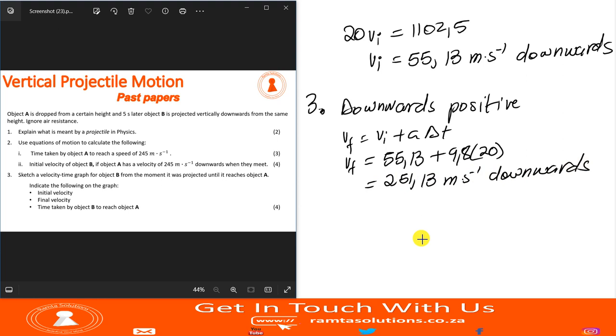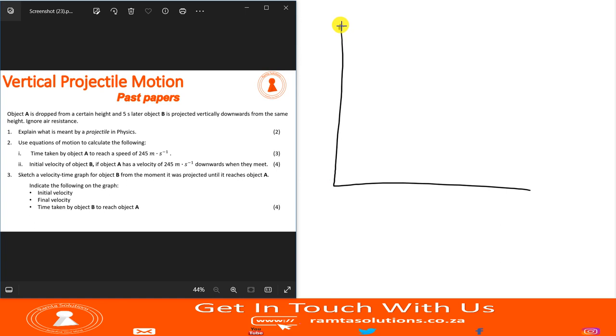So we need to sketch velocity versus time. Because we had said downwards is positive, the slope will be positive as well. So this is velocity in meters per second, and the time in seconds. Initial velocity was 55.13, final velocity was 251.13, and the time was 20 seconds. So this is it.